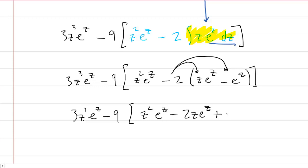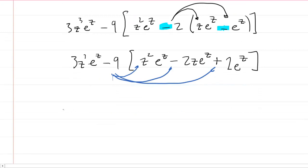Now be careful here, it's going to become plus 2 e to the z, because of, of course, this minus and this minus. And then, finally, I suppose we might want to distribute this minus 9 into the three terms of the bracketed expression.